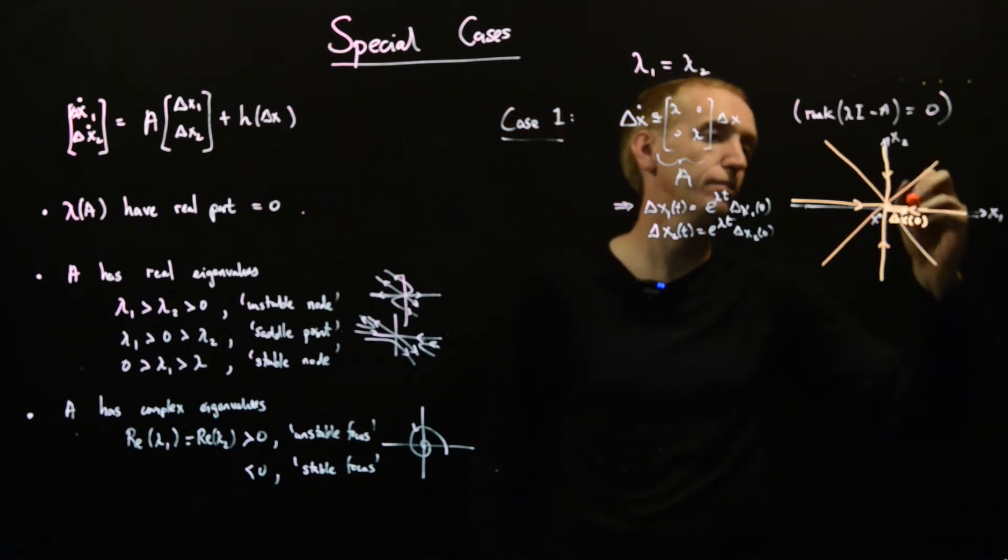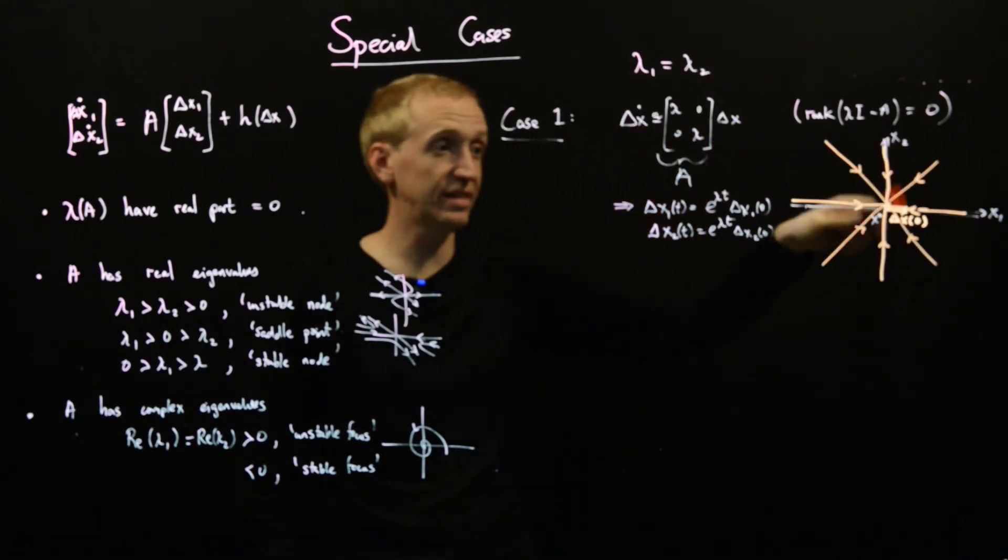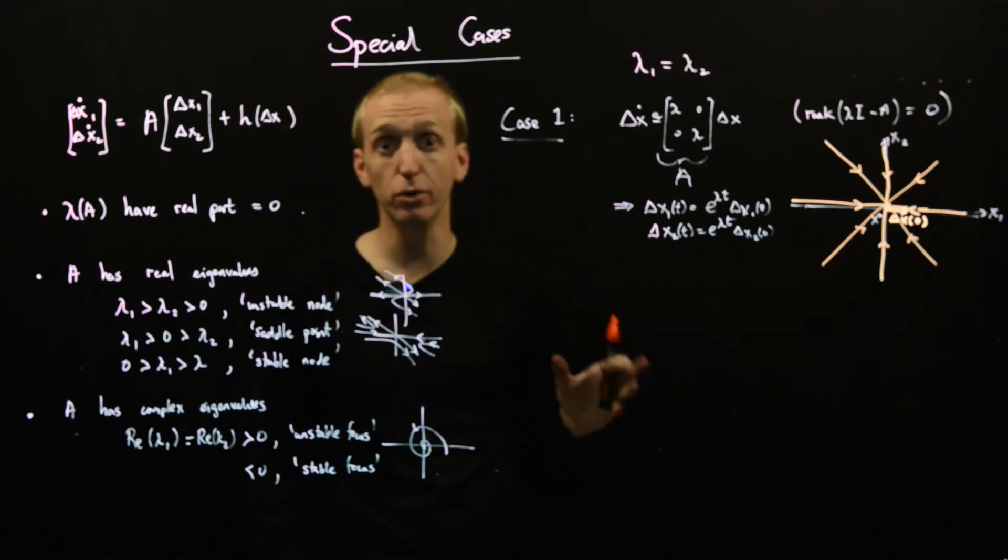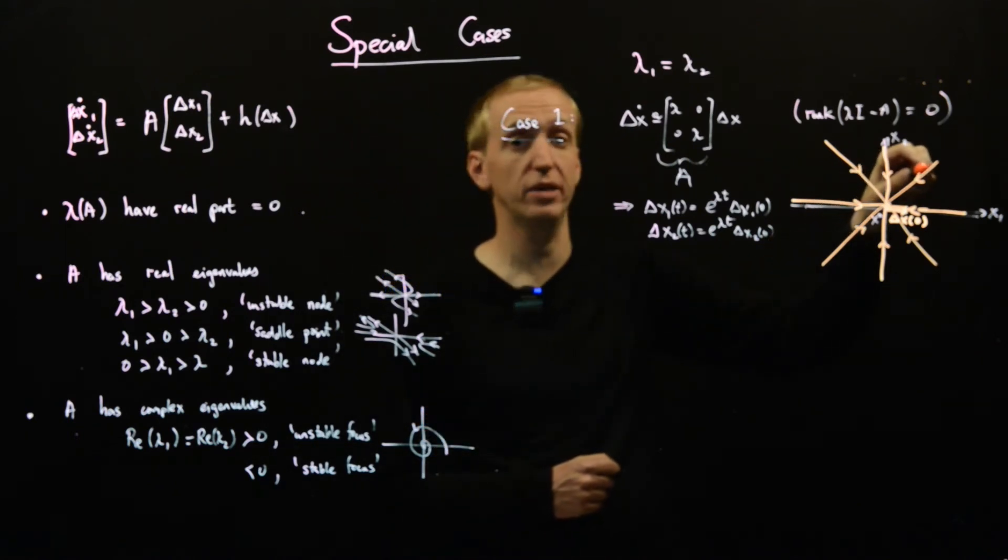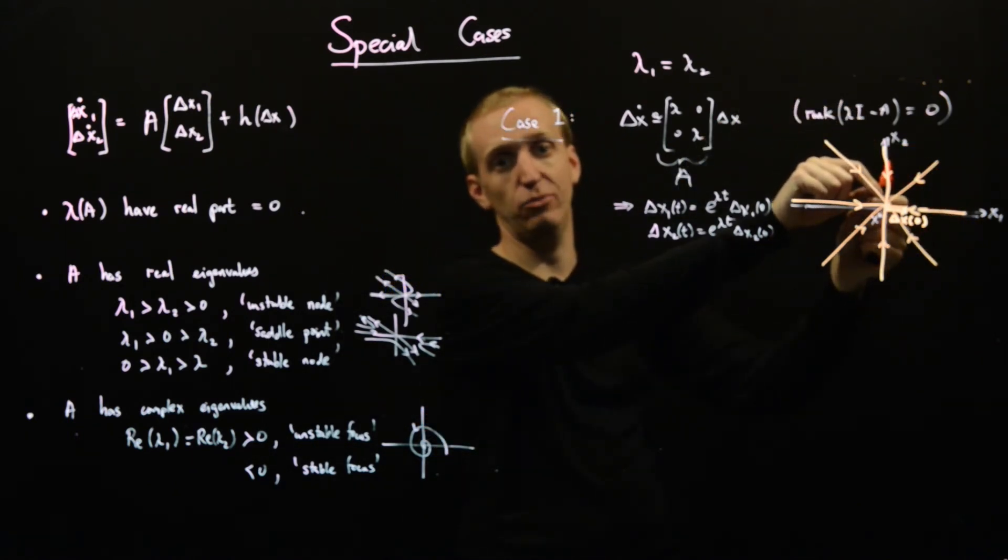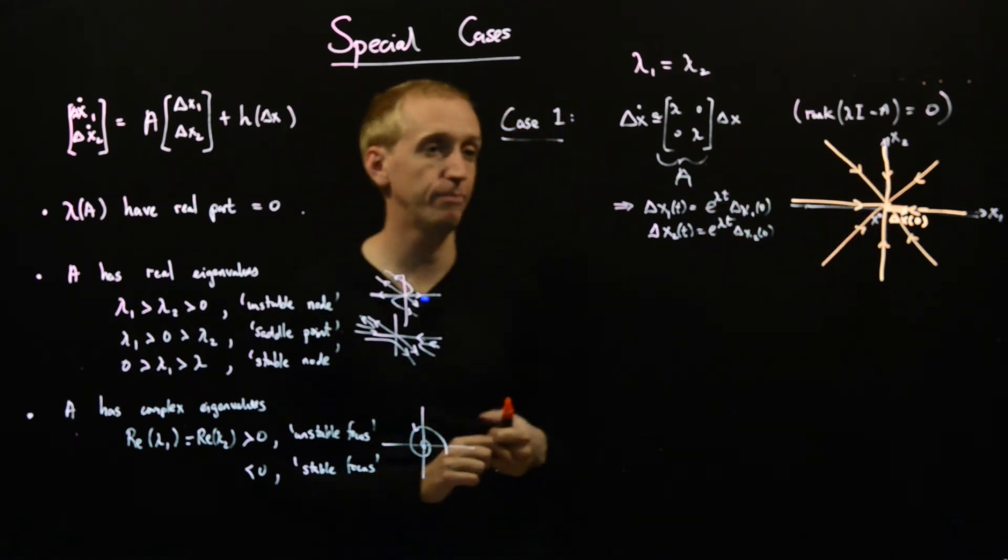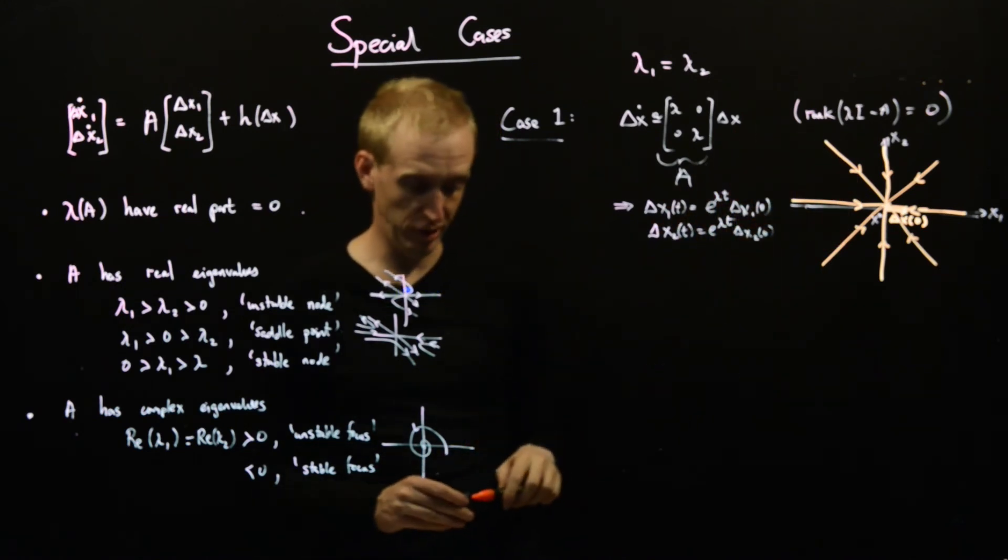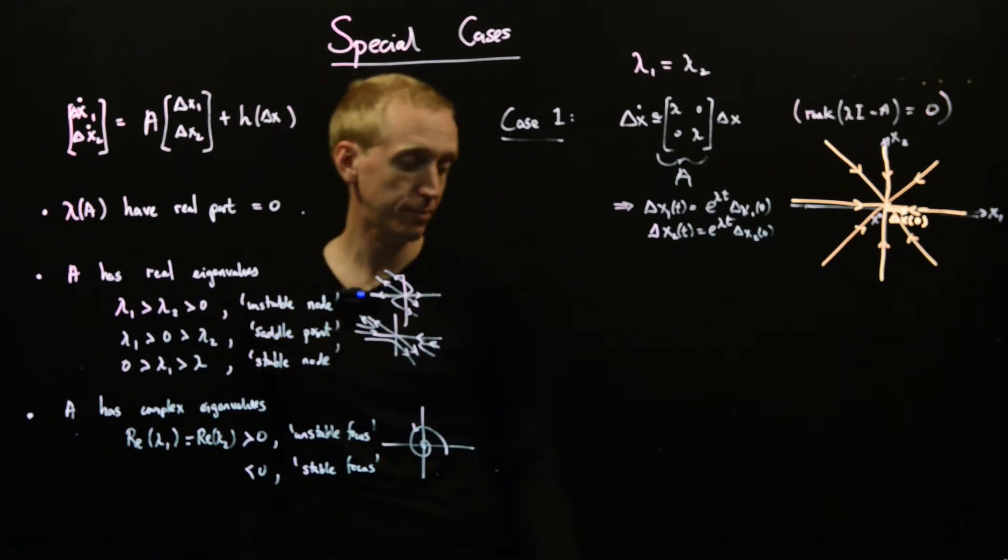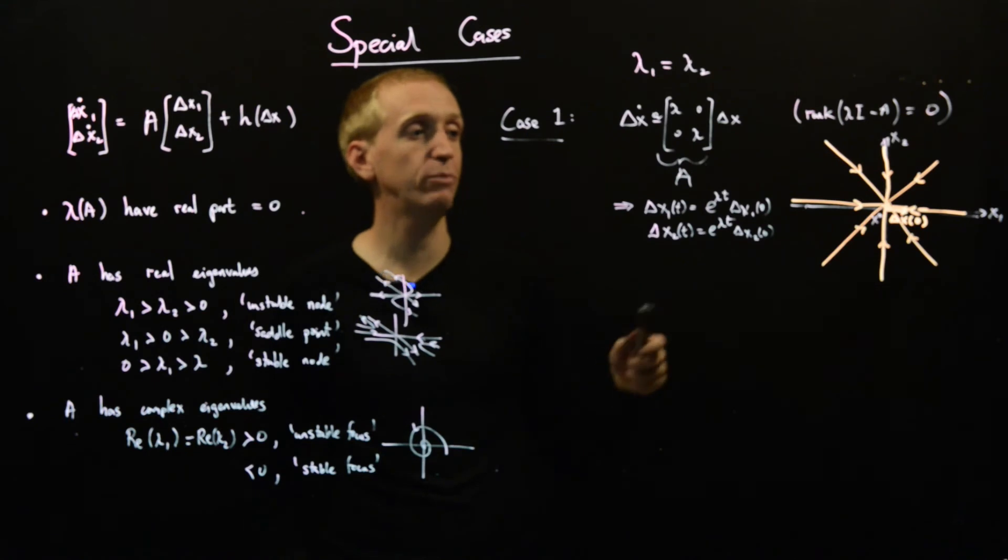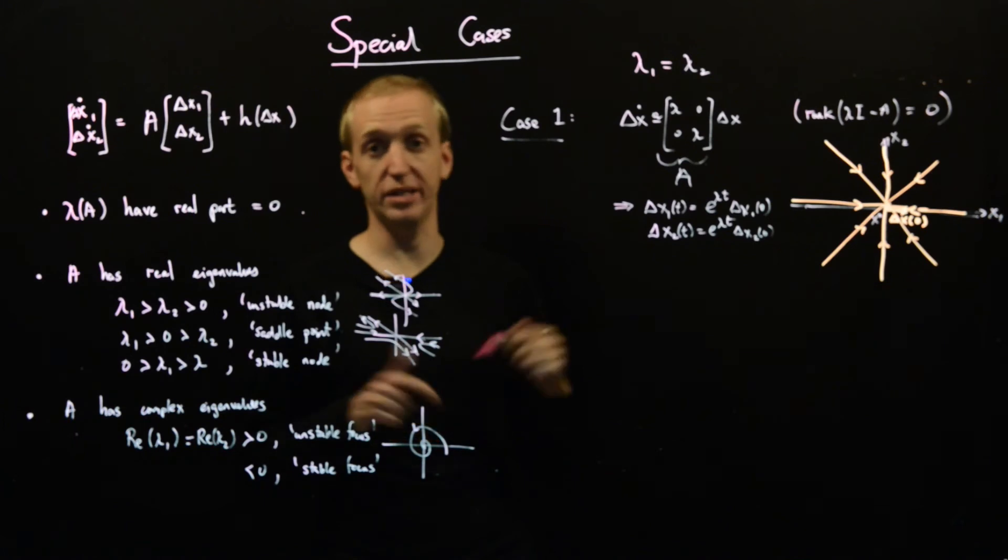So if we start somewhere over here, we get a behavior like this. So this is exactly like the behavior of the node. It's just now we have two eigenvectors that decay at the same rate. So if we start somewhere out over here, we get sucked into the origin the same rate. And this is kind of like a node. Sometimes it's called a star, I think. But we can understand that in the same way that we could understand the node case over here. And again, you'd call this stable or unstable, depending on whether the eigenvalue is negative or positive. So that's case one. That's very familiar.